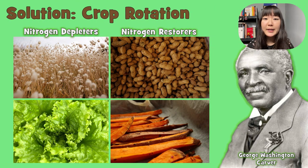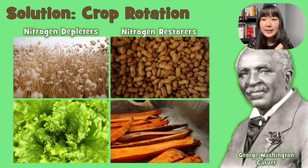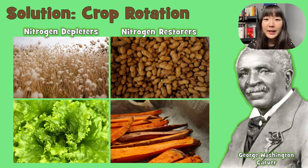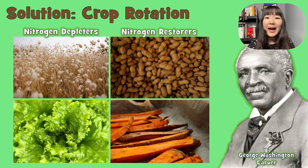Cotton is one of the crops that depletes nitrogen from the soil. Unlike legume crops that have bacteria which can convert nitrogen, crops like cotton — and lettuce as shown on the left — just suck up all the nitrogen out of the system without putting anything back. When all they're doing is taking, eventually you'll be left with no nitrogen in your soil because nothing is replenishing it. That's why the farmers weren't seeing any yields or increases in their cotton harvests.